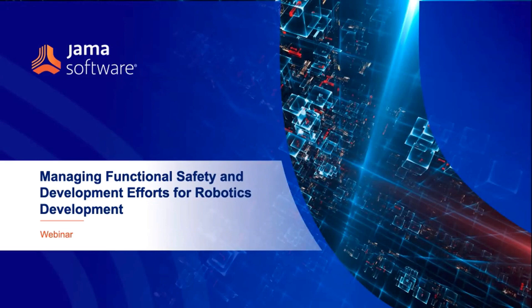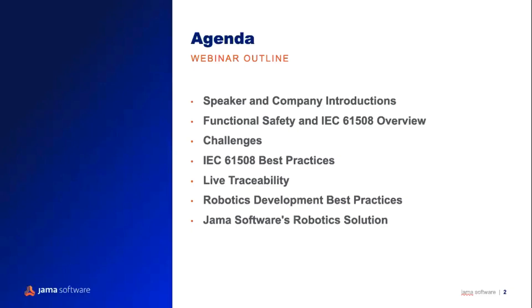And with that, I'll pass it over to you, Stephen. Thanks, Julia. Hi everyone, and welcome to the webinar on managing functional safety and development efforts for robotics development. In terms of the agenda today, we're going to be starting off with speaker and company introductions. We'll then look at functional safety and provide an IEC 61508 overview, associated challenges, and associated best practices. We'll then switch gears and talk about live traceability, followed by robotics development best practices, and finally wrap up with JAMA Software's robotics solution.